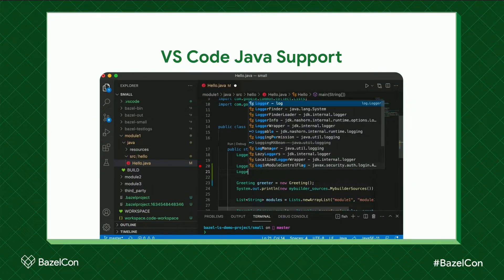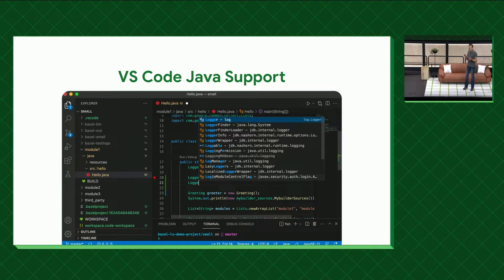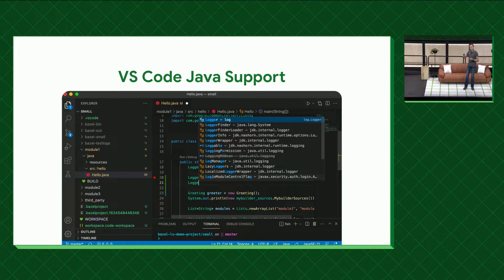If you go to the website, it's the full list of features of what you can do. And literally with the Bazel extensions that we built, we got debug support working, and we got every single feature of the language support working in VS Code. So you can do the simple things like code completion, open decorations, search for references, and all these kinds of things. But you can also do more, like run unit tests and debug them right from the IDE.